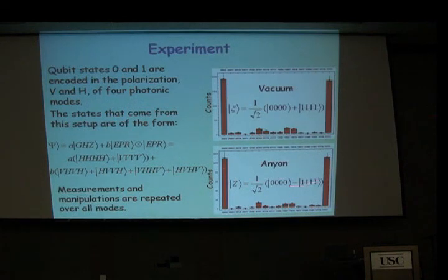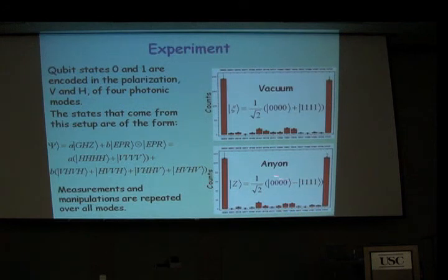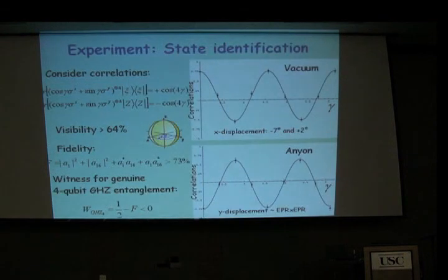The same thing happens with the anyonic state — you repeat with a minus sign and have the populations there. But this is not sufficient to tell you that you have a coherent superposition between these two components. In order to demonstrate that, you do something like a Hadamard rotation — but a more sophisticated one. You take the states out of the vacuum or the anyonic state and perform a rotation in the XY plane of all modes simultaneously with respect to the same angle gamma.